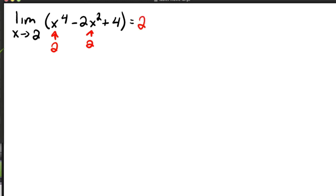And what we get is two to the fourth minus two times two squared plus four. This is equal to 16 minus two squared is four times two is eight plus four. And so this is equal to 12.